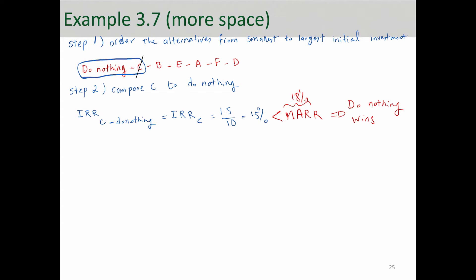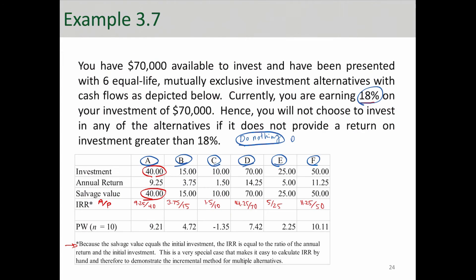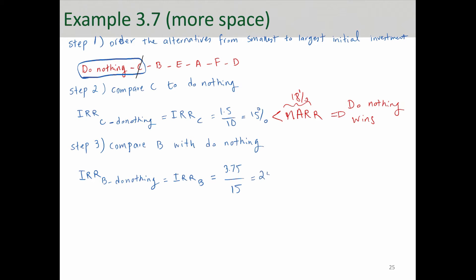The next pairwise comparison is between Do Nothing and alternative B. The IRR of B is 3.75 divided by 15, which equals 25%. Since 25% is greater than the MARR of 18%, alternative B wins this comparison.